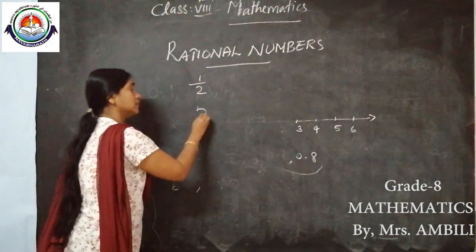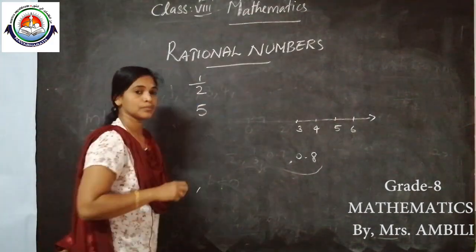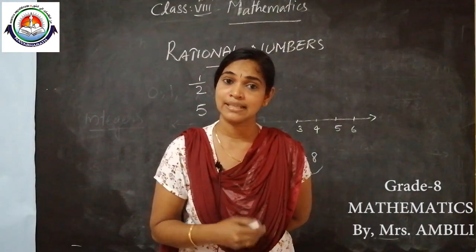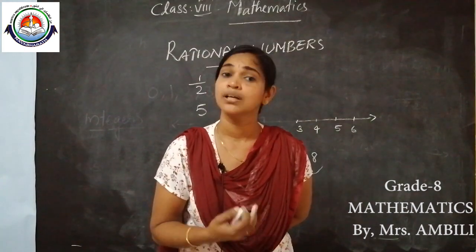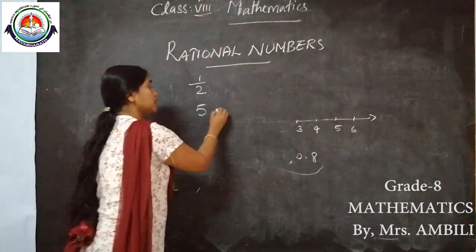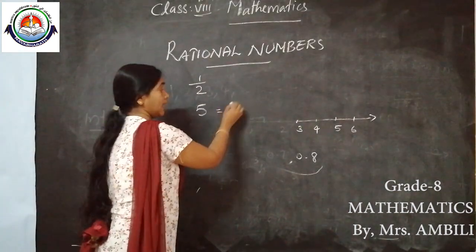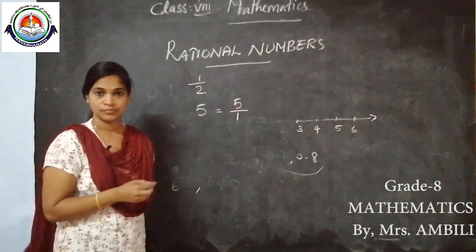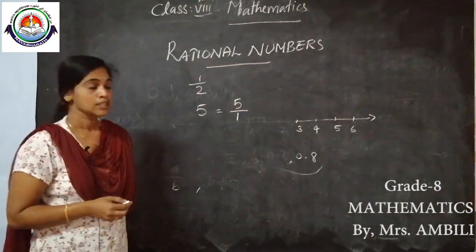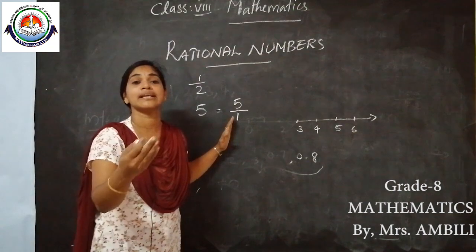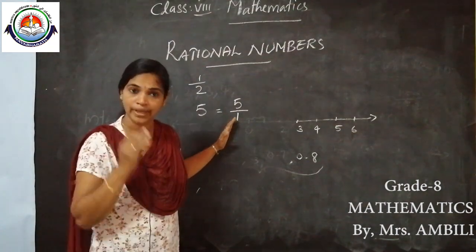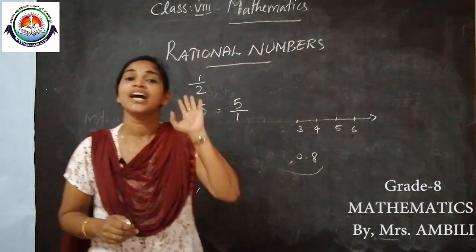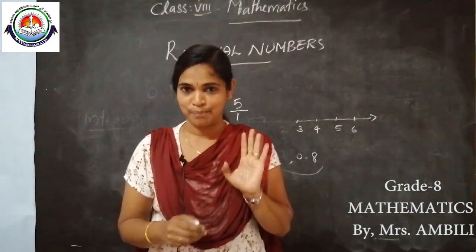Then what about 5? Is 5 a rational number? Can we express it as a rational number? Of course — how? We can write 5 as 5/1. Now 5/1 is in the form of A by B, so 5 is also a rational number.